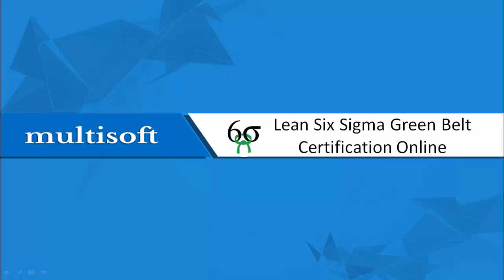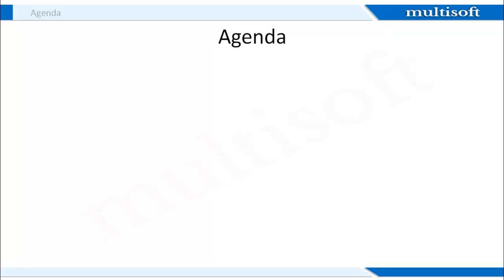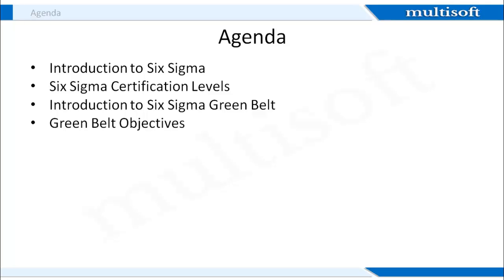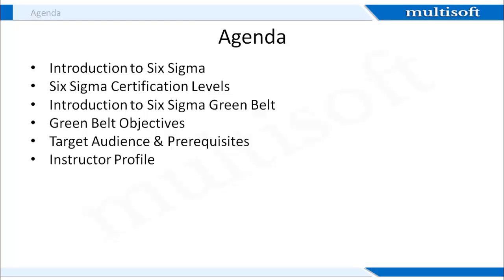Let us first take a look at what will be covered in today's session. We will start with an introduction to Six Sigma, discuss the various certification levels, understand the Greenbelt certification in particular, and also take a look at the objectives of Six Sigma Greenbelt training. I will then tell you about the prerequisites and target audience for this certification and training. I will also share the profile of the instructor so that you are assured about the quality of training that Multisoft delivers. After this we will move to the course specific details which will include the complete course outline for Six Sigma Greenbelt training and then the sneak preview section.